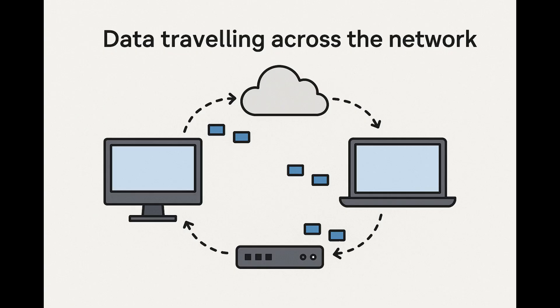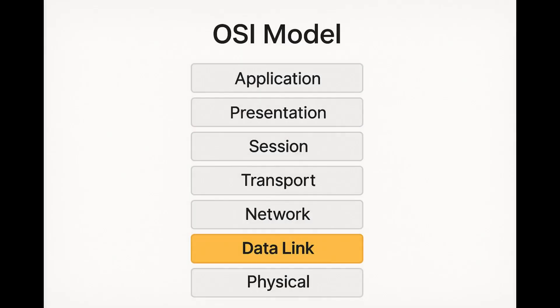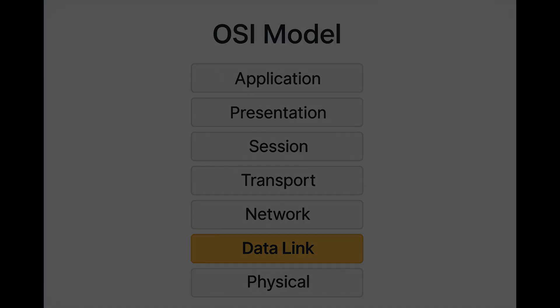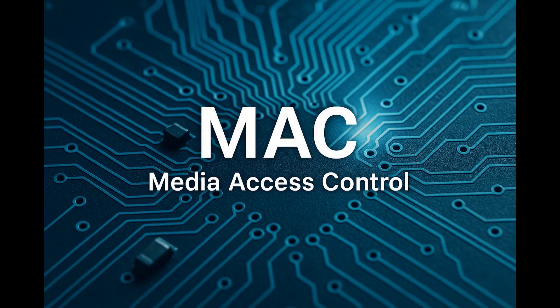The OSI model is a reference model in networking that explains how data travels across the network. A switch is a layer two network device, in comparison to a router which is a layer three network device. Routers work with IP addresses, and switches usually do not. Layer two in the OSI model means that we work with MAC addresses, which stands for media access control, and it is a physical address.